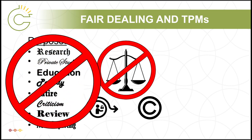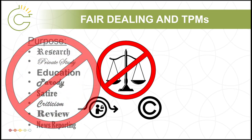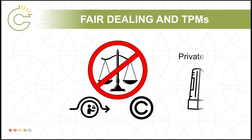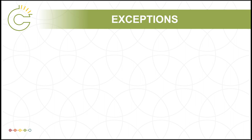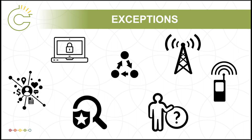The limited exceptions for bypassing a TPM do not include doing so for the purposes of fair dealing. For example, you might not lawfully be able to circumvent a TPM-enabled system, like a gaming console, for the purpose of learning how it works. Furthermore, the exceptions for lawfully circumventing a TPM are relatively narrow. For examples and information about these exceptions, please see our module on Section 41 of the Copyright Act about TPMs.